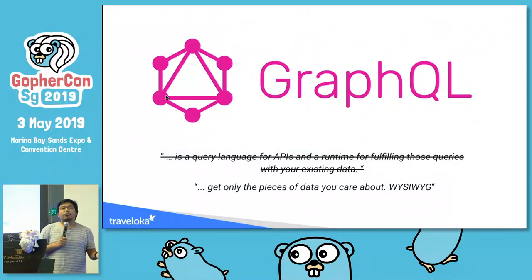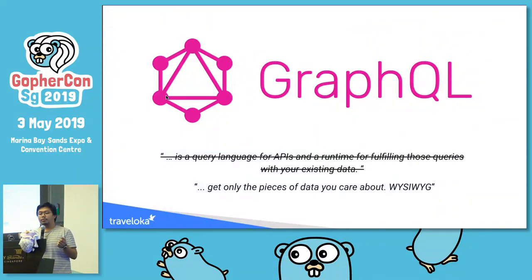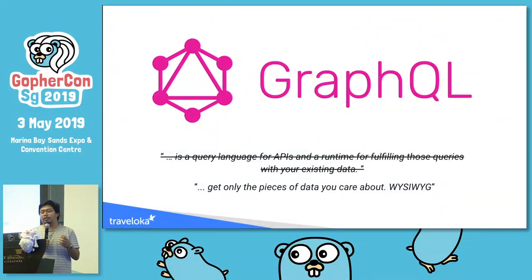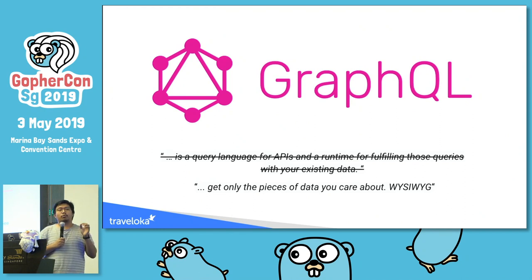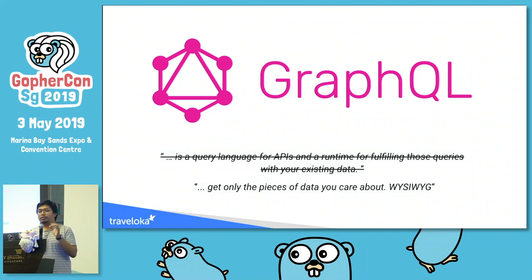This is how we solve it — we use GraphQL. GraphQL is a query language, but I prefer to say: get only the pieces of data that you care about. What you ask is what you get.